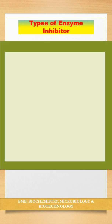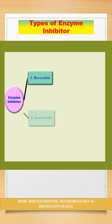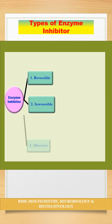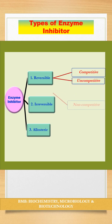There are three types of enzyme inhibitors: reversible, irreversible, and allosteric. The three types of reversible inhibitions are competitive, uncompetitive, and non-competitive.